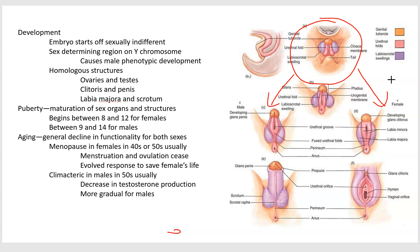You'll see that there are a few structures listed as homologous. The ovaries and testes come from the exact same tissue in the embryo. Likewise, the penis and the clitoris, and the labia majora and the scrotum are derived from the same embryonic tissue. So males and females — they look different, but they're not that different. They just got shaped differently from the effects of hormones and genes.